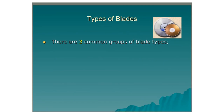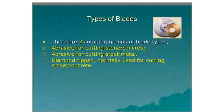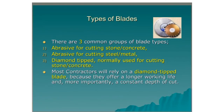The three common groups of blade types are: one, abrasive for cutting stone or concrete; two, abrasive blade for cutting steel or metal; three, diamond tipped, normally used for cutting stone and concrete. Most contractors will rely on a diamond tip blade because they offer a longer working life and, more importantly, a constant depth of cut. The abrasive blades wear down after each cut.